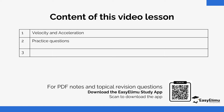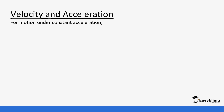Previously we talked about speed and looked at how to calculate average speed. Now, when we talk about motion at constant acceleration, we use the formula: average velocity equals the initial velocity plus final velocity divided by 2. When we come to velocity-time graphs, you will notice you are going to use this formula a lot.